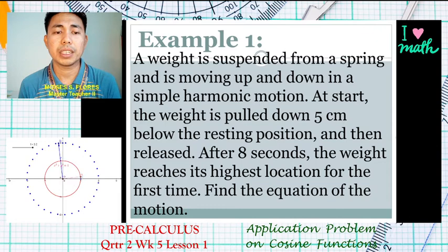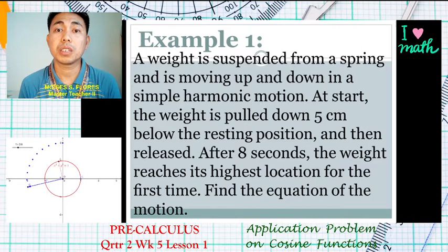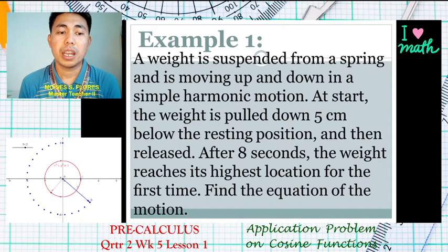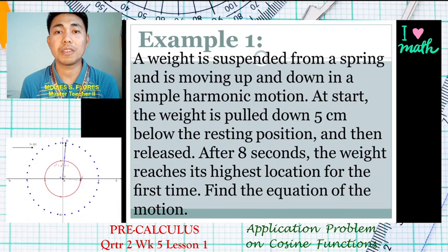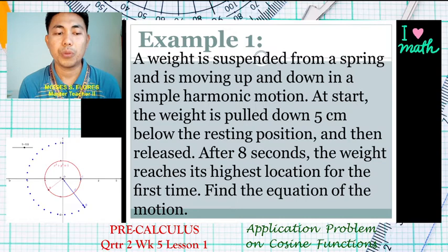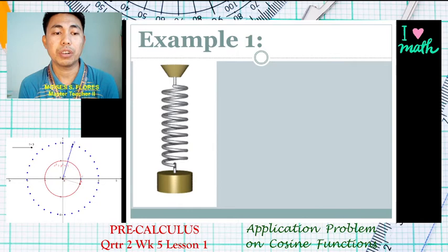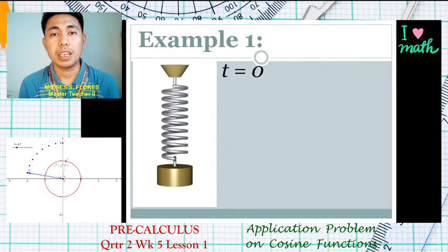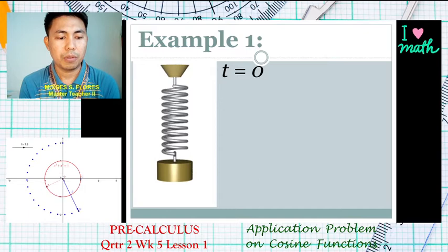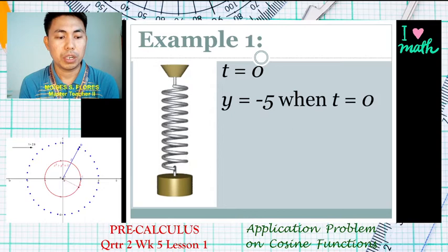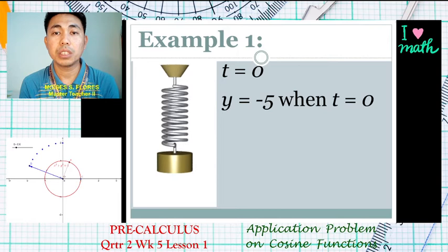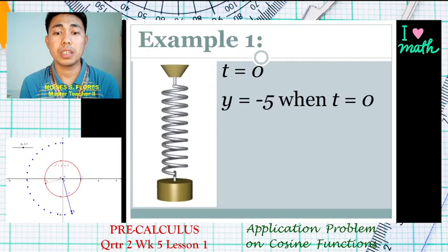There is a weight suspended from a spring. The given information: time started is zero, it was pulled down — so the direction is downward, denoted as negative. After eight seconds is another given. If we illustrate the scenario, the weight is at its lowest position at t equals zero, pulled down five centimeters, so y equals negative five when t equals zero.